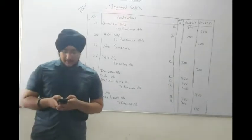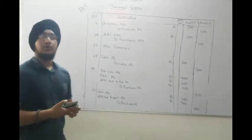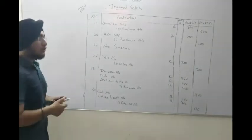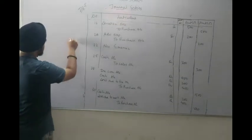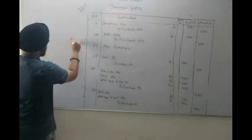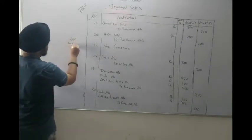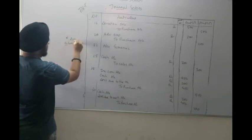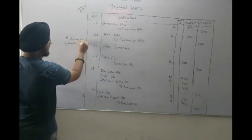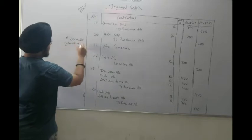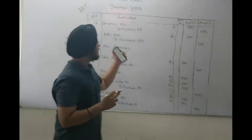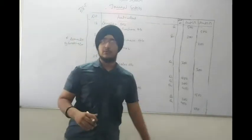Next transaction: Goods of Rs.500 given as a donation. Donation is an expense (nominal account, debit), and goods go out (real account, credit). Journal entry: Donation account debit to Purchase account.